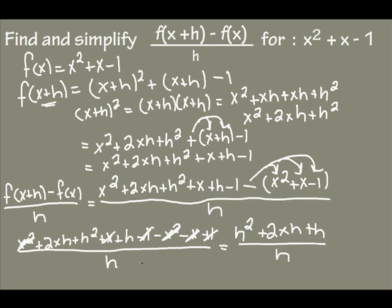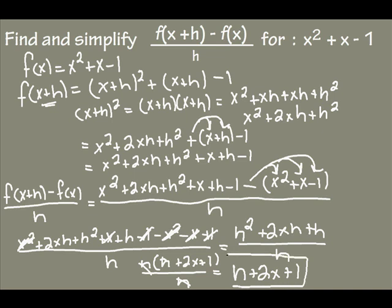So I'm going to have h times 2x plus h plus 1, divided by h. So the h's will cancel, which leaves me with 2x plus h plus 1. And that's what I would get when I simplify the difference quotient for x squared plus x minus 1.